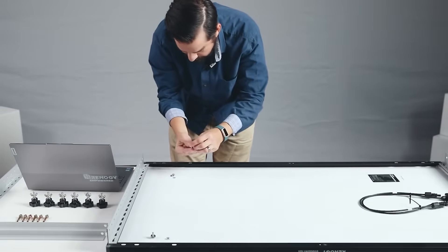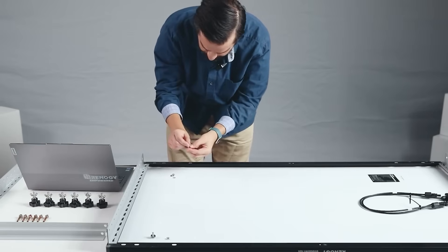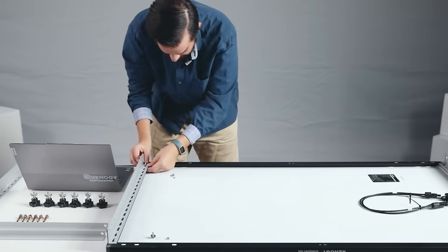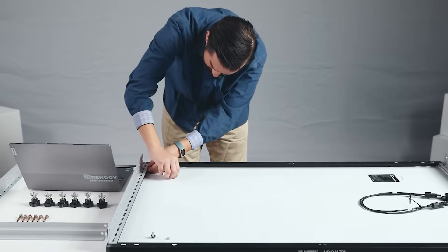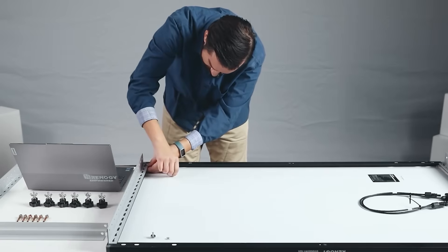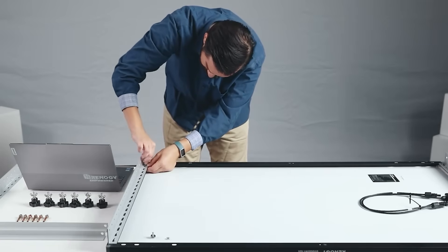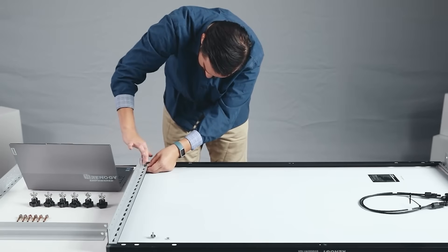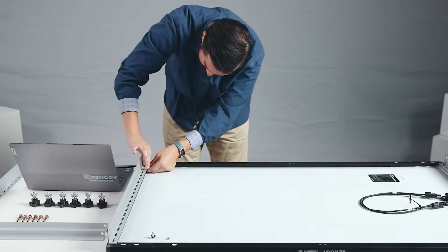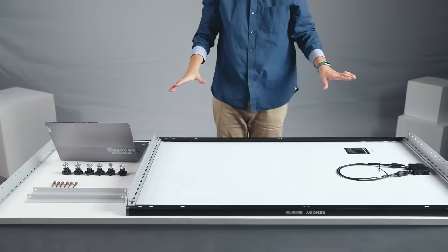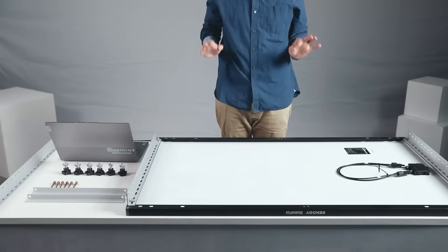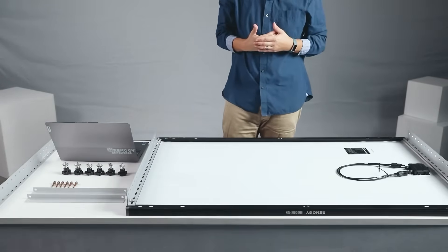Nut and washer come underneath, washer on top, lock nut and your nut. Finger tighten and then you're going to make sure you tighten it down with a wrench. Great, so here we have the first set of the brackets adhered to the panel.